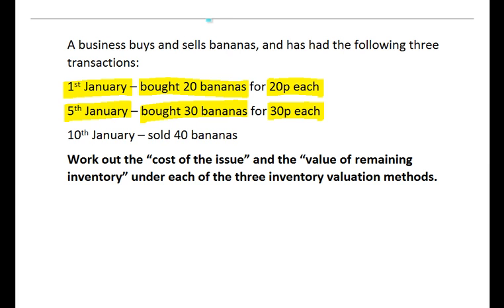And then on the 10th of January, they sell 40 bananas, they make an issue of inventory, so that's bananas going out of the storeroom. Now if they had 50 bananas and they've sold 40 of them, they're going to have 10 bananas left at the end of the period.